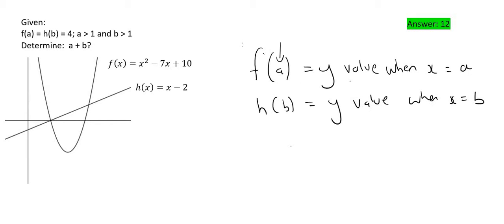And they tell us that f of a is equal to h of b, which is equal to 4. So the y values of both of those graphs are equal to 4 when x is equal to a in the parabola, and when x is equal to b in the straight line. Now, even if that part doesn't make perfect sense in a test, let's say you're in a test and it's a bit confusing, just start substituting things in.